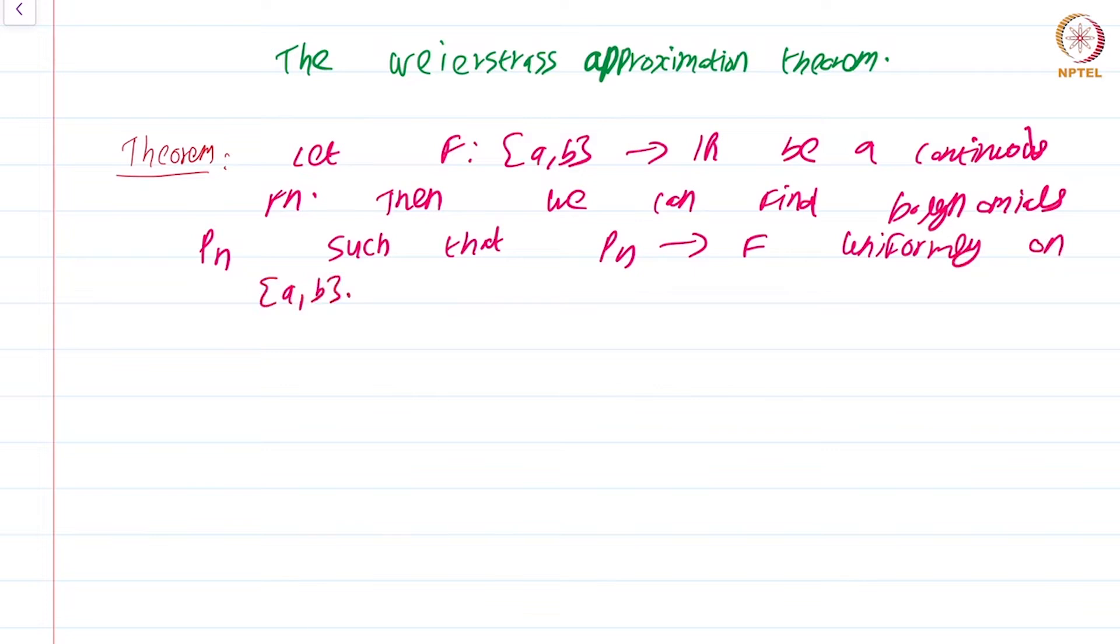In essence, this theorem tells us that no matter how complicated the function f is, we can always find a polynomial that is as close to f as we desire.